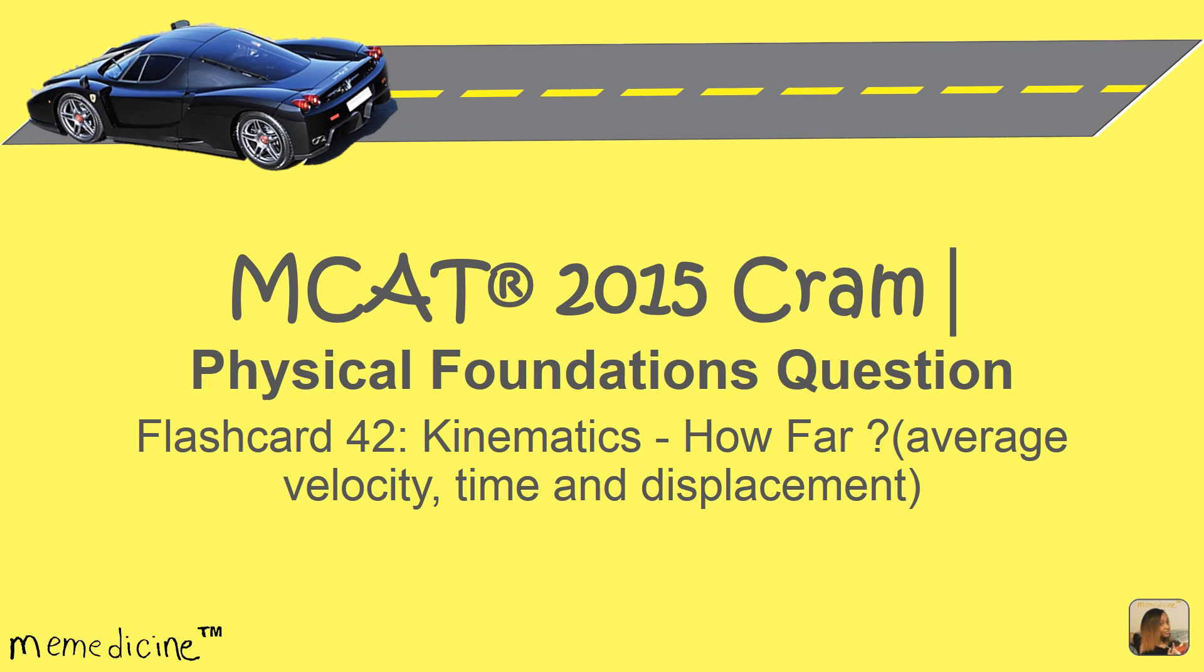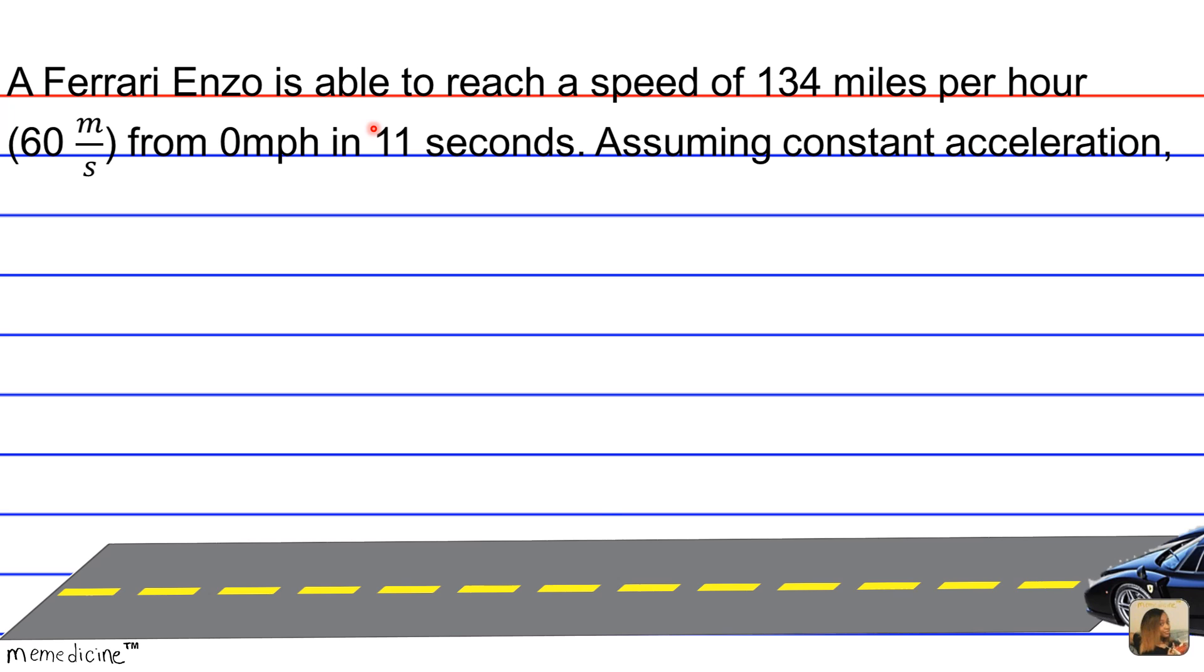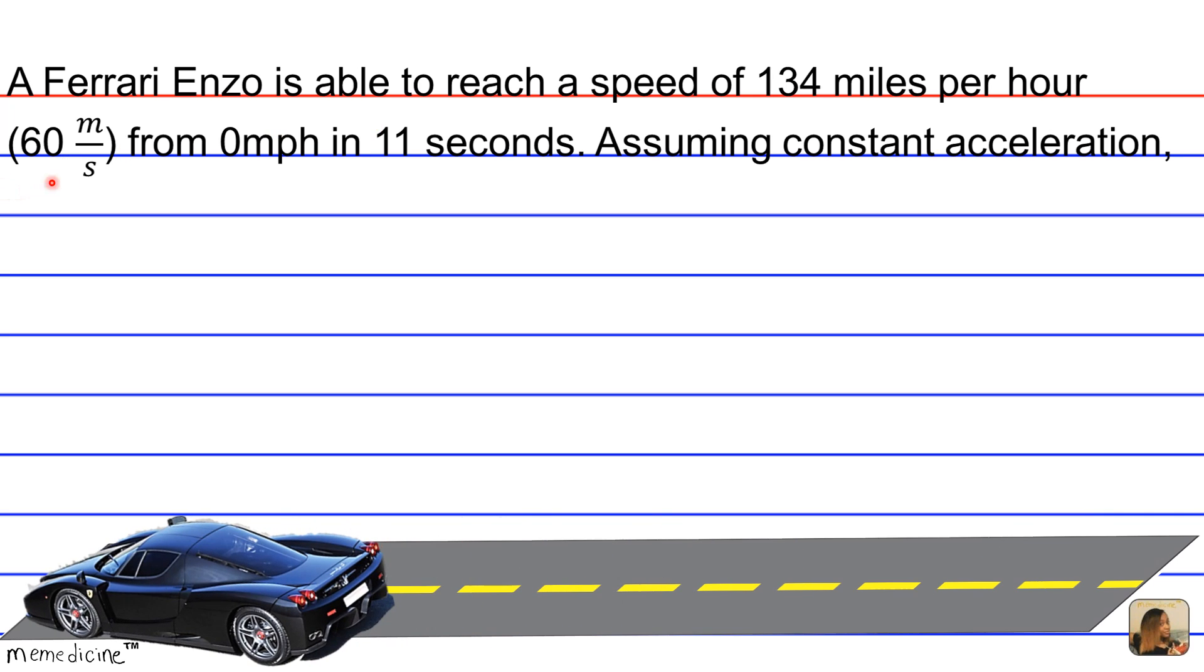A Ferrari Enzo is able to reach a speed of 134 miles per hour, or 60 meters per second, from zero miles per hour in only 11 seconds. Wow, this is really fast. Assuming constant acceleration, how far would the Enzo travel in this amount of time?